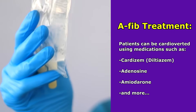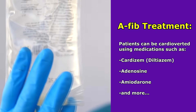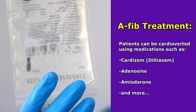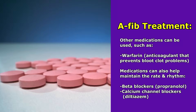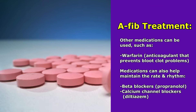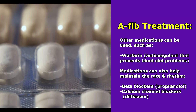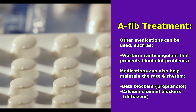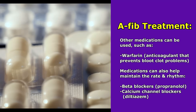Patients can also be cardioverted through pharmacological methods instead of electrical methods. Medications that can be used include cardizem (diltiazem), adenosine, amiodarone, or other types of medications. Other medications you want to be familiar with as a nurse are anticoagulants — one type is warfarin, also known as Coumadin — which helps prevent clot formation. The patient can also be prescribed beta blockers like propranolol, or calcium channel blockers like diltiazem and verapamil, to help maintain a normal rate and rhythm.